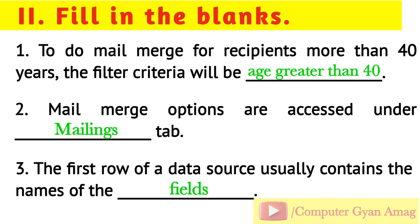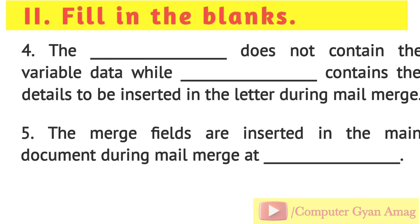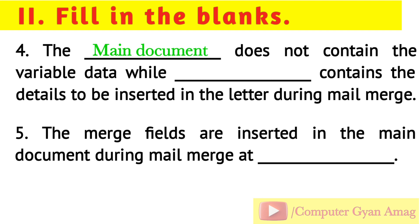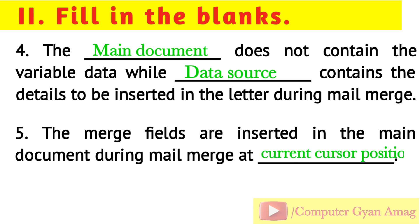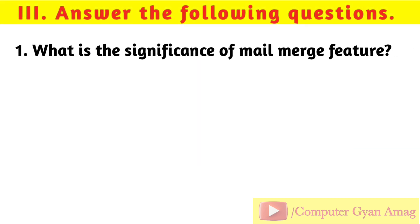3) The first row of a data source usually contains the names of the fields. 4) The main document does not contain the variable data, while the data source contains the details to be inserted in the letter during mail merge. 5) The merge fields are inserted in the main document during mail merge at the current cursor position.